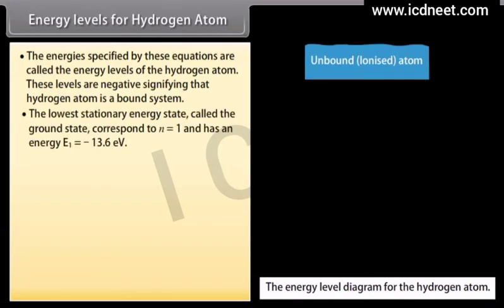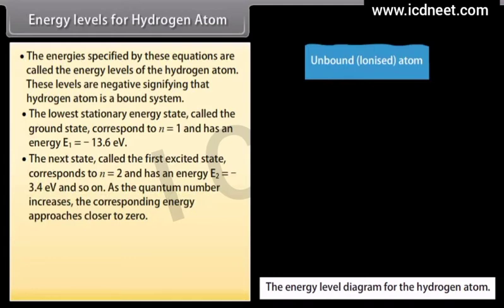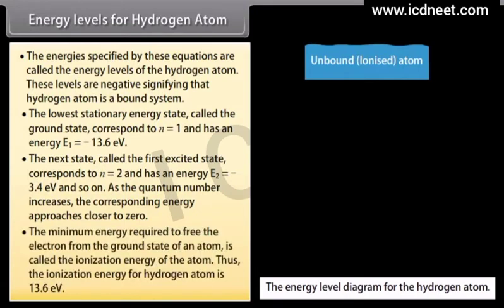The lowest stationary energy state, called the ground state, corresponds to n = 1 and has energy E₁ = −13.6 eV. The next state, the first excited state, corresponds to n = 2 and has energy E₂ = −3.4 eV, and so on. As the quantum number increases, the corresponding energy approaches closer to zero. The minimum energy required to free the electron from the ground state is called the ionization energy; for hydrogen, this is 13.6 eV.